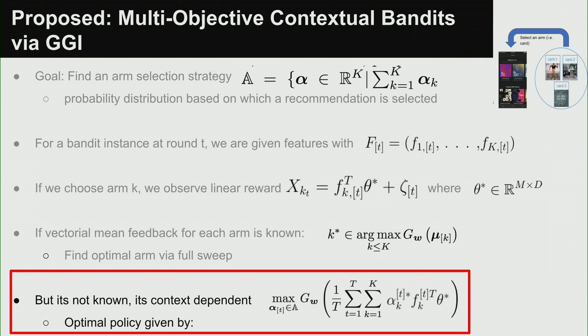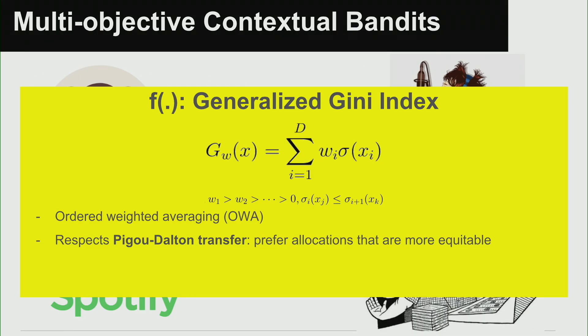The Gini index works across multiple objectives: in expectation you get equal weighted importance to each objective. The key difference from single-objective functions is that GGI inherently allows equitable distribution. Whether I optimize purely for relevance, a linear combination of objectives, or a Gini index combination — GGI is more useful because it inherently enables this equitable distribution across all competing objectives.